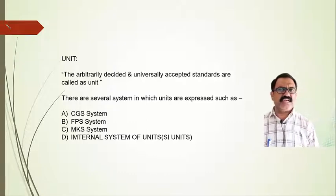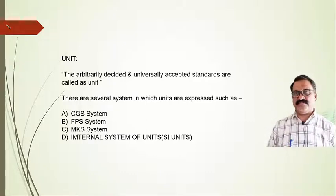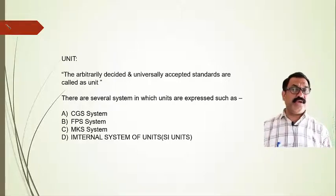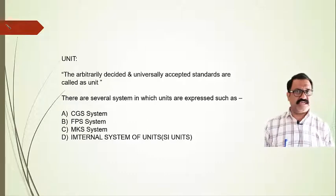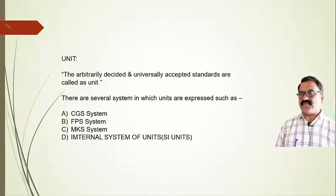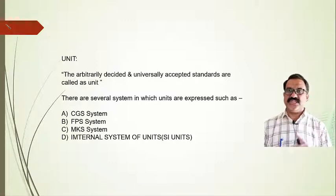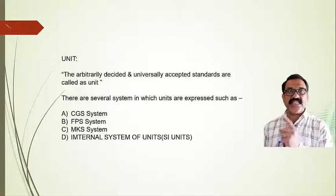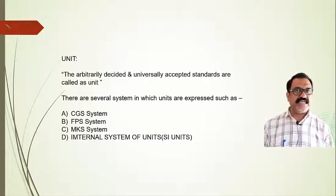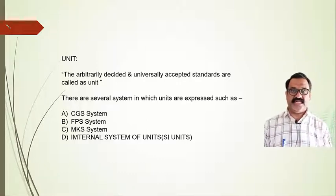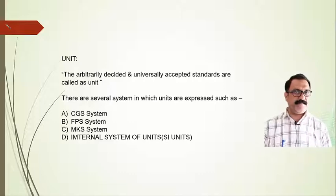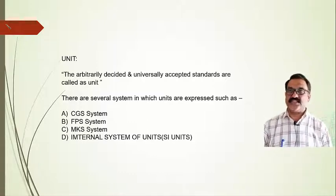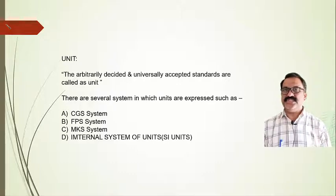There are several systems in which units are expressed. The first is the CGS system, a system in which length is measured in centimeters, mass in grams, and time in seconds. This system is called the CGS — centimeter, gram, second — system.